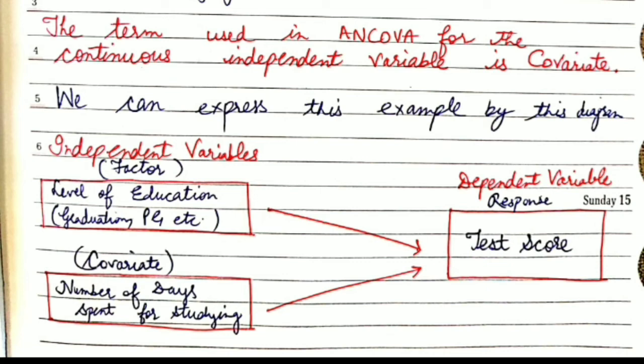Let us see this diagram. There are independent variables: level of education, which is the factor, and the covariate, which is the number of days spent studying. The response variable is the test score. ANCOVA compares a continuous response variable by levels of a factor variable, controlling for a continuous covariate such as number of days spent studying.